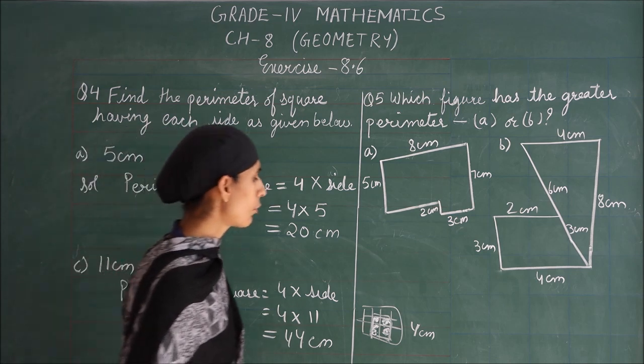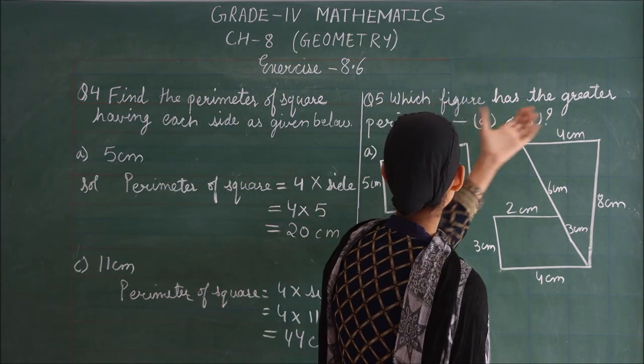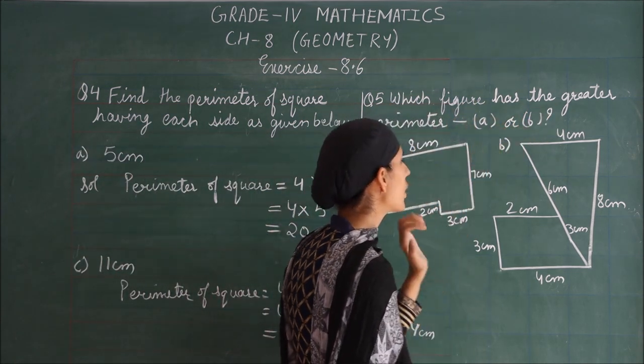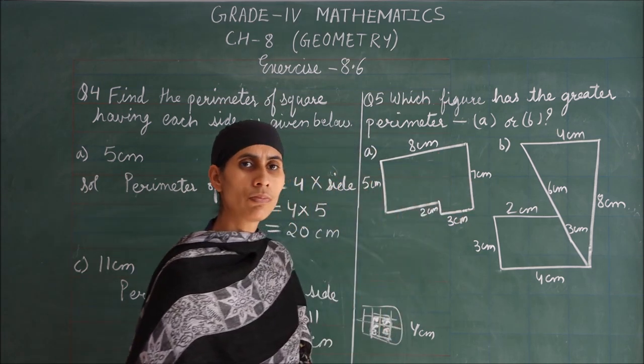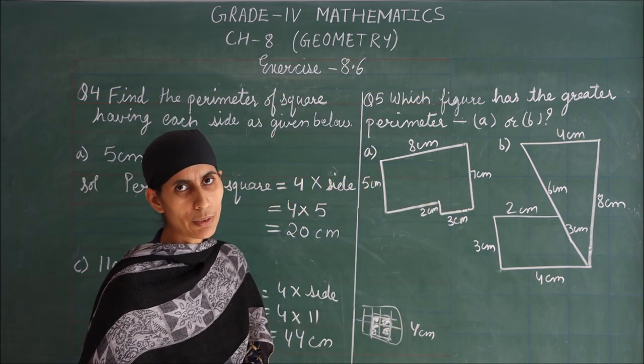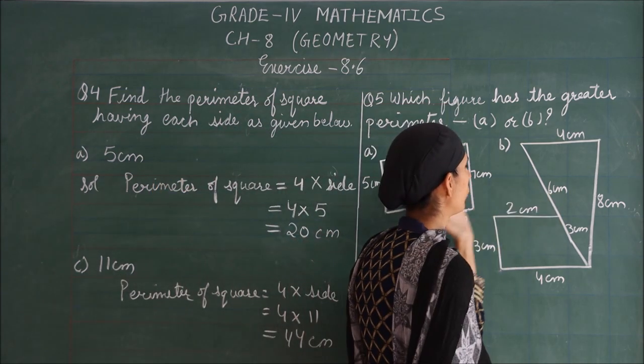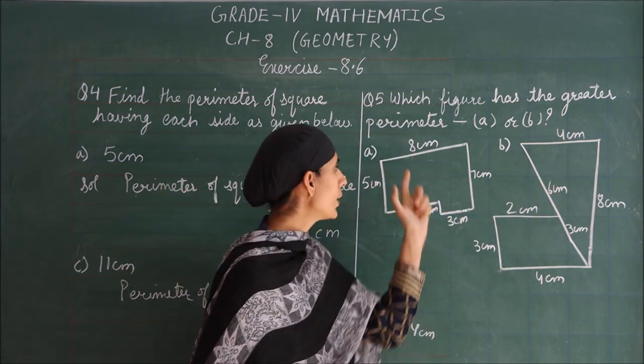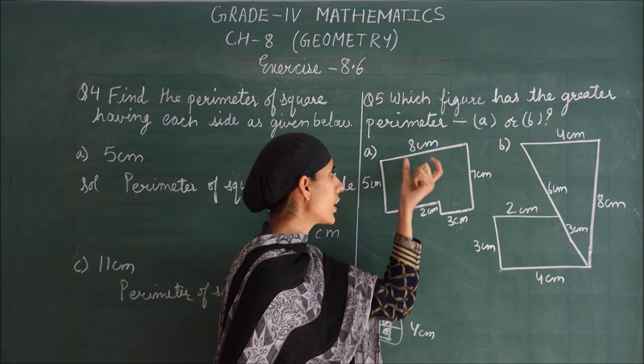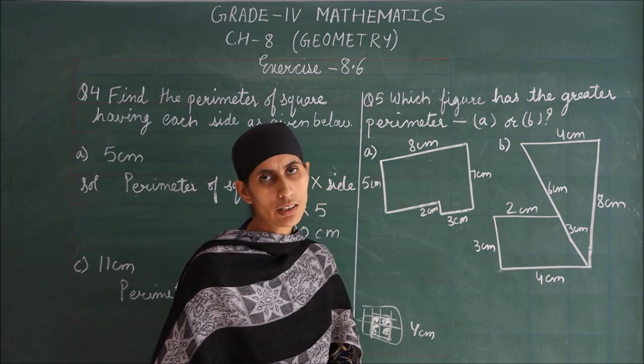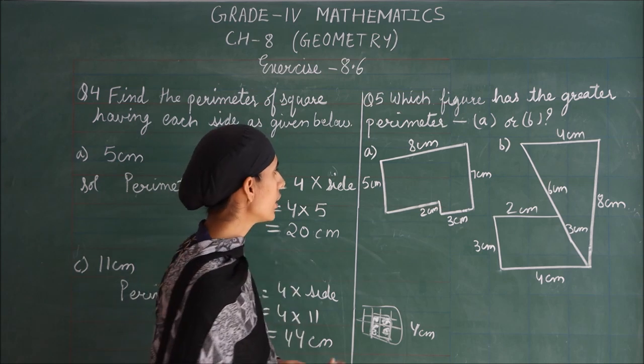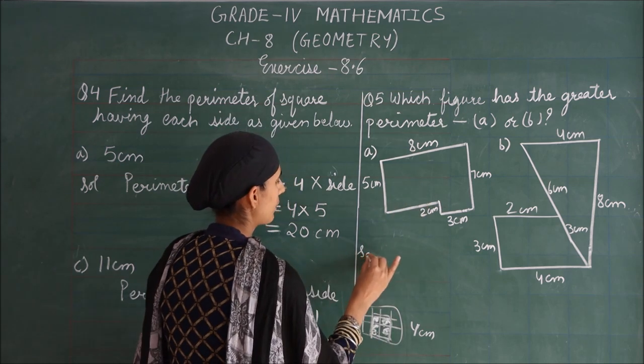Now, come to question number 5. Which figure has the greater perimeter, A or B? What we will do is: we have two figures with given measurements, and we need to add all the sides to get the perimeters. Look at the solution.